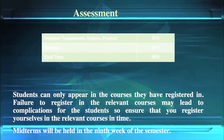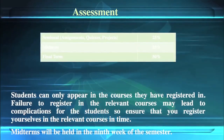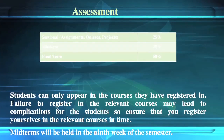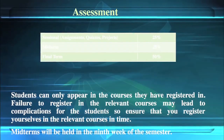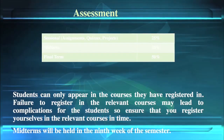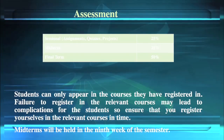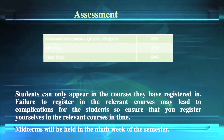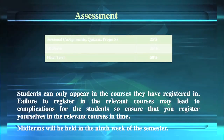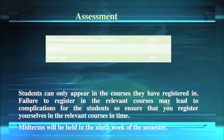Students must maintain 75% attendance in order to be eligible to appear in the Final Term examination. Marks are converted to numerical value in terms of GPA, i.e., grade point average: 60% marks yield a GPA of 2.0, whereas 70% marks yield a GPA of 3.0. It is the student's responsibility to keep a record of their GPA, credit hours, and registration of courses.